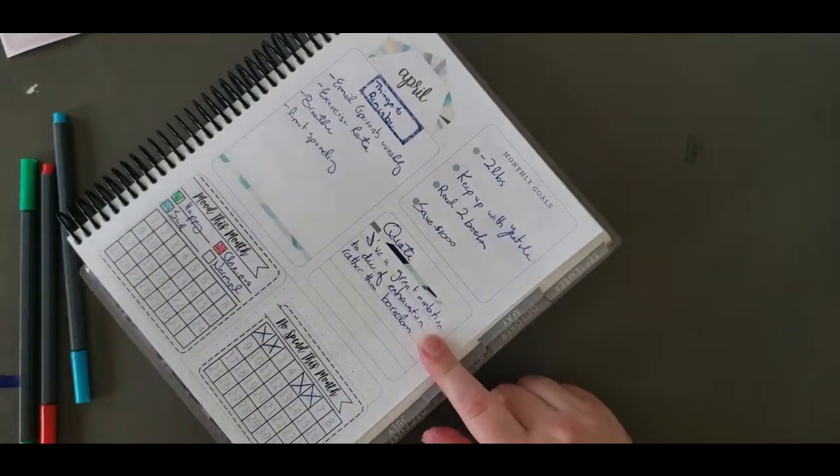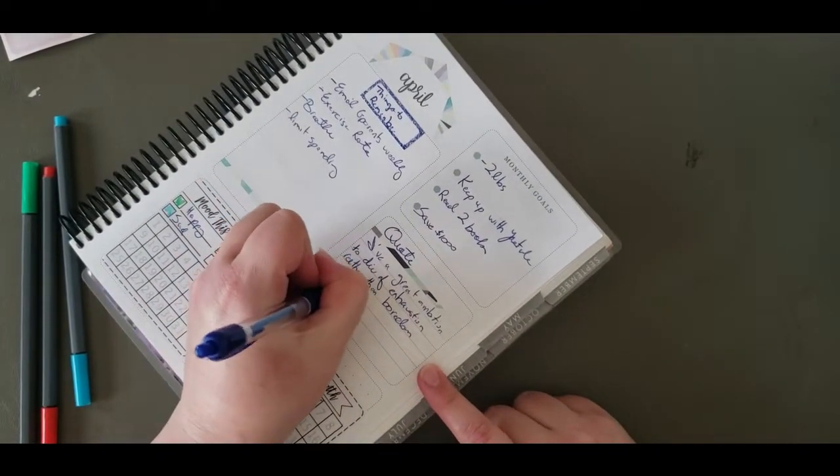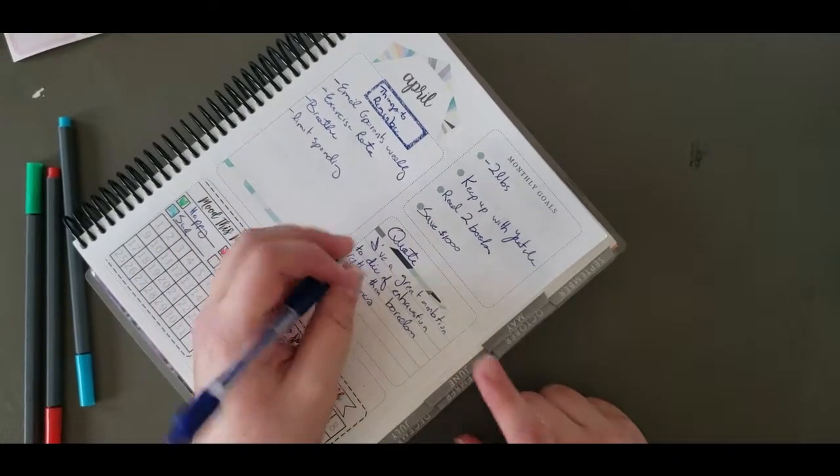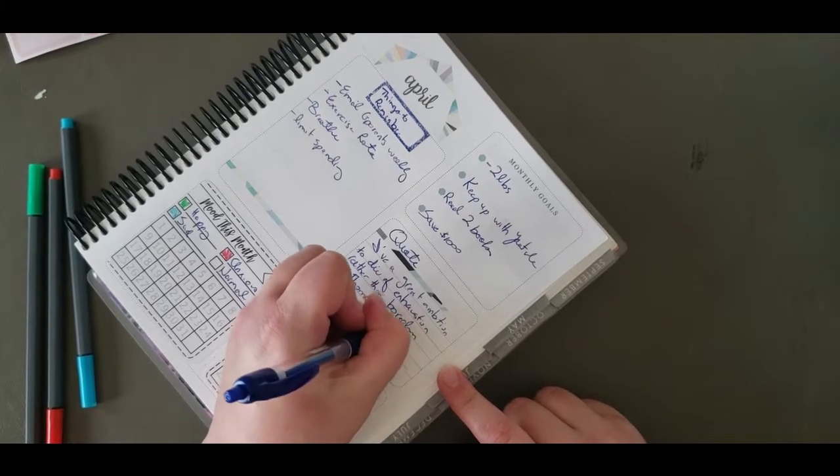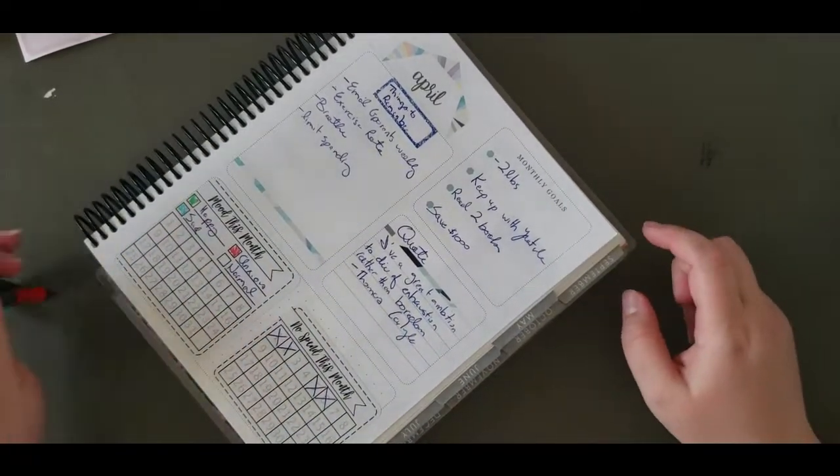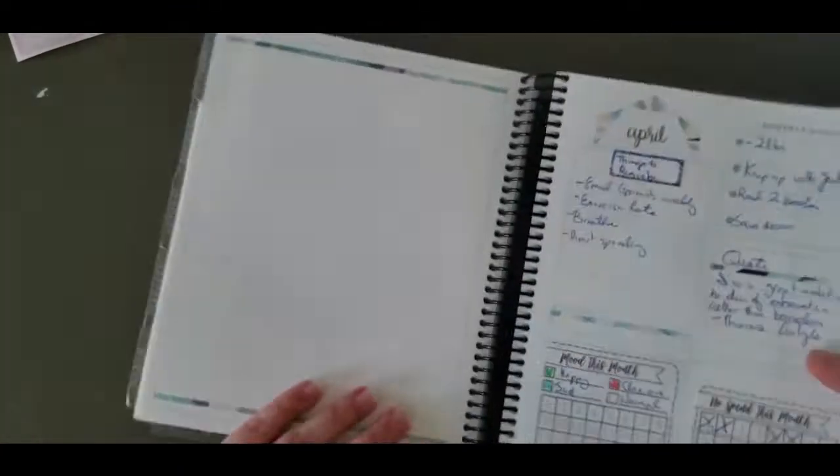So the quote that I chose is from Thomas Carlyle, and it is, I have a great ambition to die of exhaustion rather than boredom, which I hope will inspire me to remain busy this month.